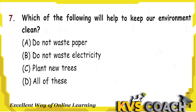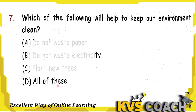Next question: which of the following will help to keep our environment clean? Option A, Do not waste paper — yes, because paper is made from trees. Option B, Do not waste electricity — yes, if we do not waste electricity it will also keep our environment clean. Option C, Plant new trees — yes, this is the most important; if we plant new trees we keep our environment healthy and clean. So all options are correct, and the right answer is option D, All of these.